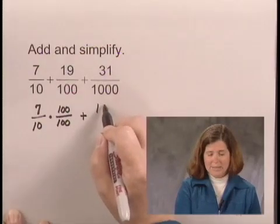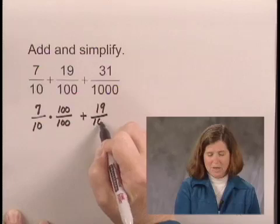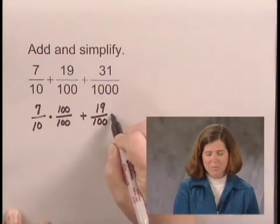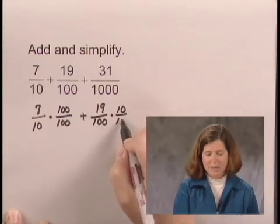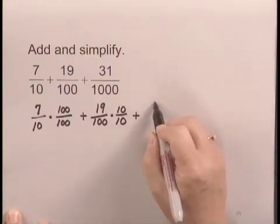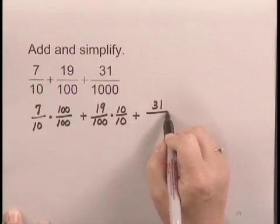We rewrite 19 hundredths with a denominator of 1,000 by multiplying by 10 over 10, and 31 over 1,000 already has a denominator of 1,000.